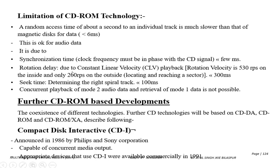There is also a millisecond gap due to rotation delay. Rotation delay relates to constant linear velocity (CLV), as seen in CD-DA — the track rotates at a constant linear velocity that must be maintained differently for inside and outside tracks: 530 rpm on the inside and 200 rpm on the outside. Additionally, concurrent playback of Mode 2 audio data and retrieval of Mode 1 data is not possible — both cannot happen simultaneously.